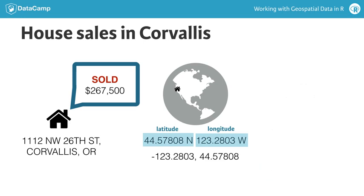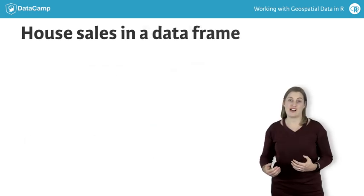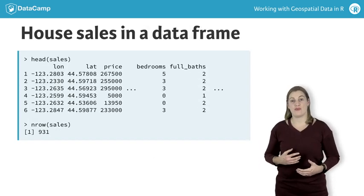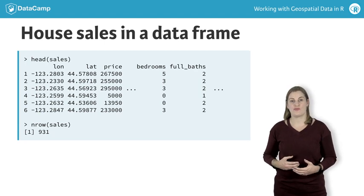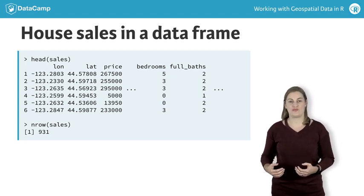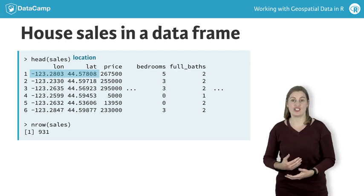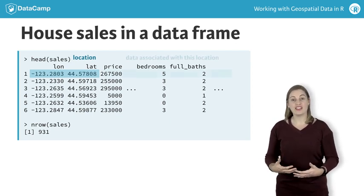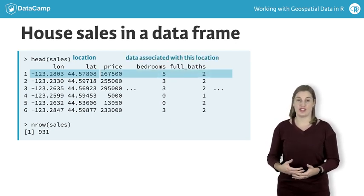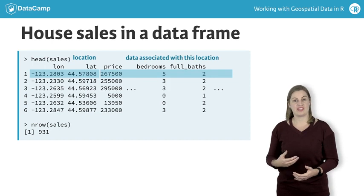In math, we are so used to specifying location in x and y, that you'll also often see longitude listed first, since it specifies the horizontal, or x-coordinate. Let's take a look at these house sales as you'll see them in a data frame in R. Each row is a sale. There are latitude and longitude columns that describe the location of the sale.